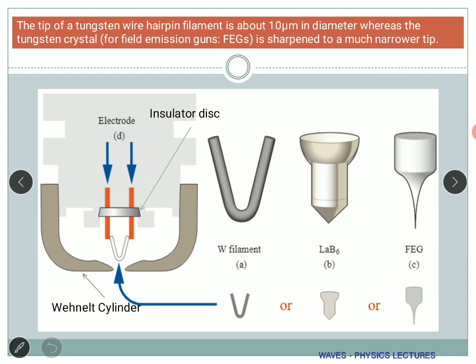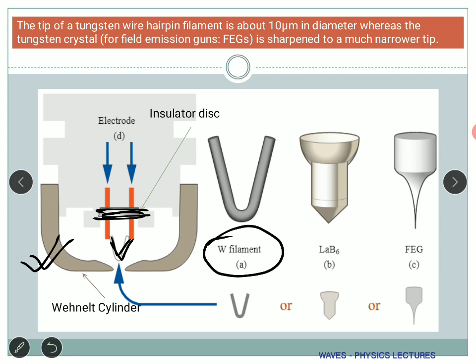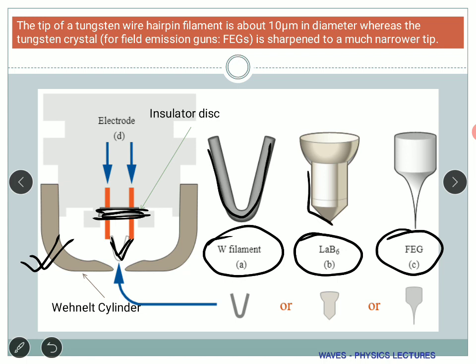This is a typical simplified diagram of an electron gun with an anode and a cathode. The Wehnelt cylinder is visible, along with an insulator disc and the tip — the material from which electrons are emitted. This material might be a tungsten filament, lanthanum hexaboride, or a field emission gun. There is a difference in design: tungsten is roughly V-shaped, and the field emission gun has a very sharp tip, so the electrons generated are fewer and more focused.